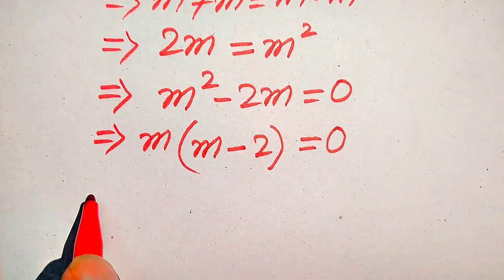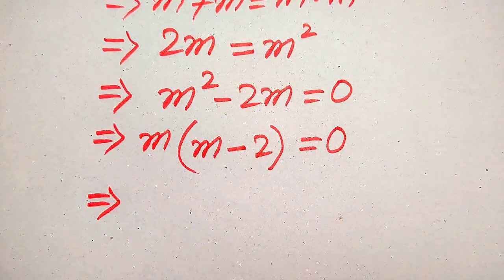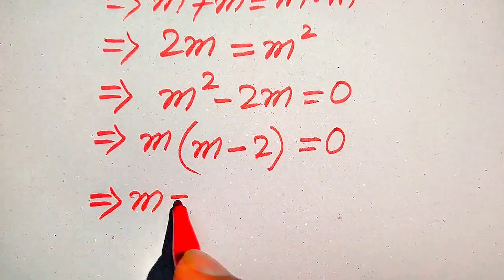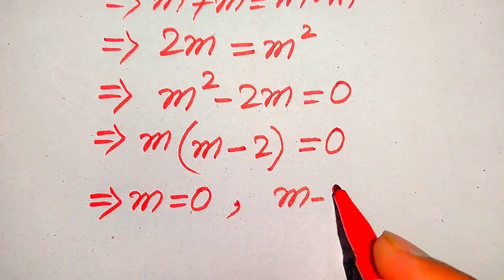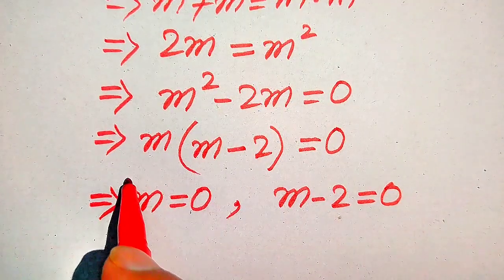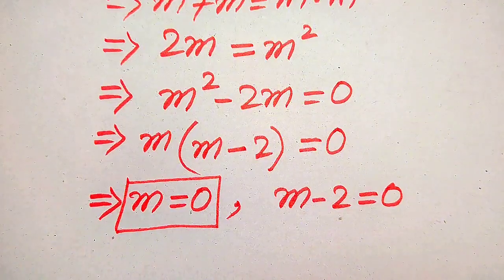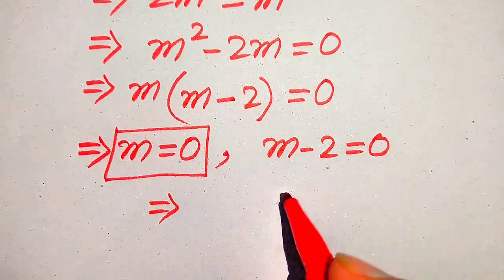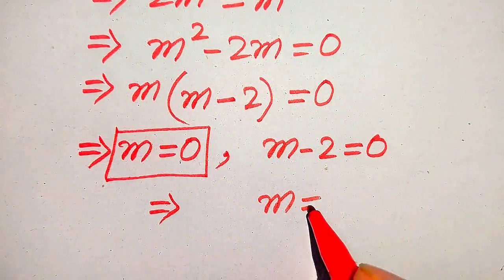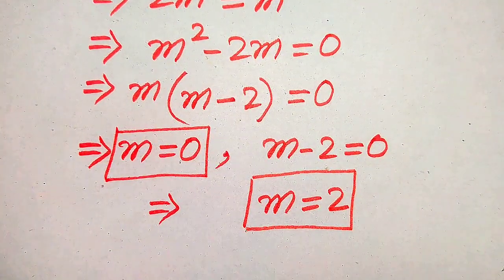Now we divide this equation into two cases. The first case gives us m equals 0, and the second case is m minus 2 equals 0. So m equals 0 is our first root. Moving minus 2 to the right-hand side gives us the second root: m equals 2.